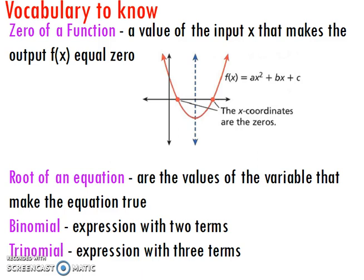The root or roots of an equation are the values of the variable that make the equation true. A binomial is an expression with two terms, and a trinomial is an expression with three terms.